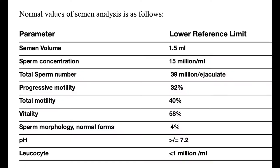A sperm count of less than 15 million per ml of ejaculate is called low sperm count or oligospermia. If the progressive motility is less than 32% or the total motility is less than 40%, this is low motility or asthenospermia. At least 4% of the sperms should be normal in structure or morphology, and if the abnormality exceeds this then it is called teratospermia.